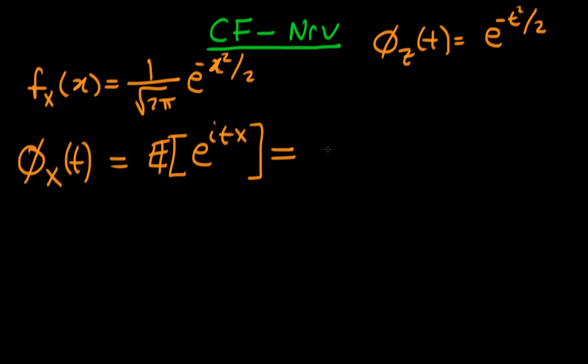Using the law of the unconscious statistician, we can get this result by integrating from minus infinity to plus infinity of e to the i t x times 1 over root 2 pi times e to the minus x squared over 2, integrated across x.